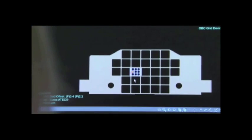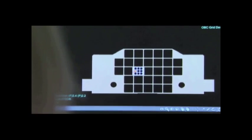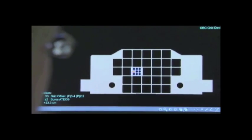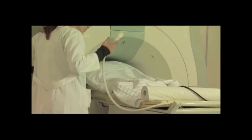Print a paper copy of the target location image or record target coordinates on the manual grid worksheet. Shuttle the patient out of the magnet.